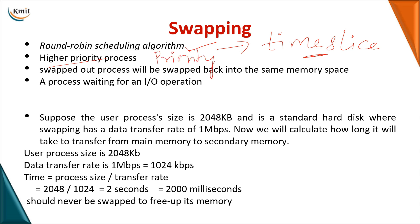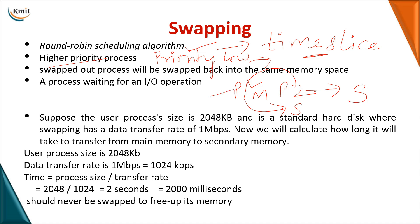The second reason is priority scheduling. If you are executing a lower priority process and a higher priority process arrives with no space in memory, the lower priority process is moved to secondary memory. In both round robin and priority scheduling, processes are moved in and out of memory.